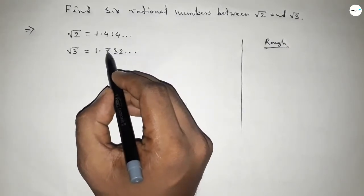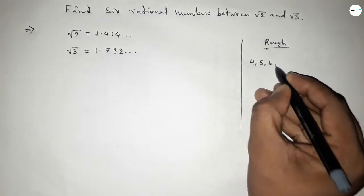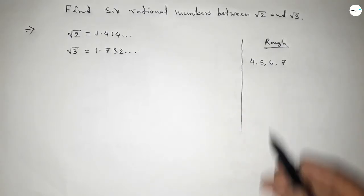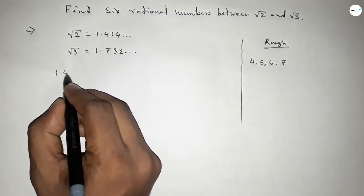So we can take between four to seven two digits, five and six. And by these two digits we can form infinite number of rational numbers, but here we need six rational numbers.